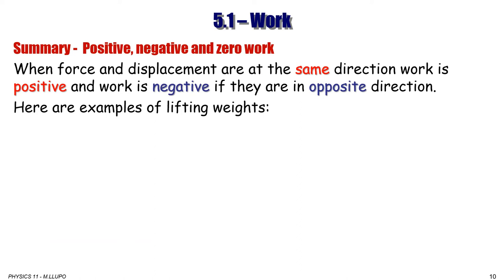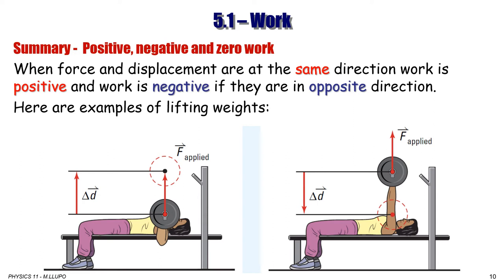To summarize: if force and displacement are in the same direction, work is positive; if opposite, work is negative. In a diagram where a weight moves upward in the same direction as the applied force, the work is positive. When the weight is lowered — displacement is downward but the applied force is still upward (you are holding it) — the force and displacement are in opposite directions, so the work done by the applied force is negative.